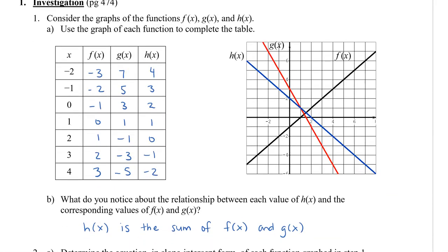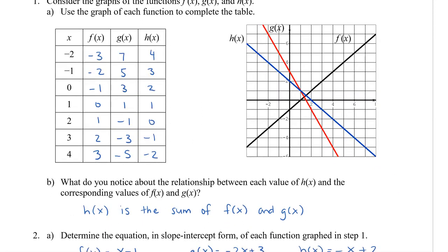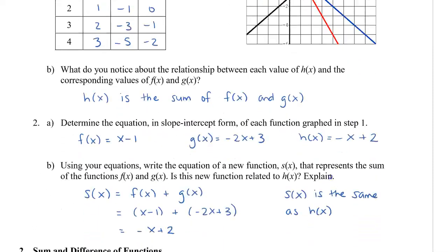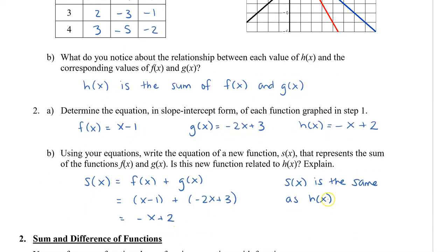So h of x is a sum of f of x and g of x. The next question asks you to determine the equation in slope-intercept form of each of the functions graphed. Recall that we use our y-intercept for our b value, and then we count our slope as rise over run. For f of x, the equation is x minus 1. For g of x, the red graph, we can see it has a negative slope, a y-intercept of 3, and a slope of negative 2, so negative 2x plus 3. H of x has a y-intercept of 2 and a slope of negative 1, so h of x equals negative x plus 2.